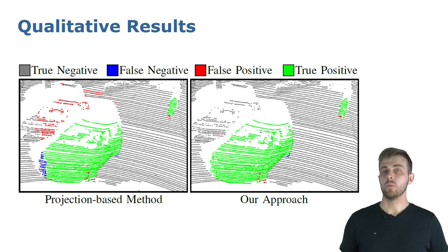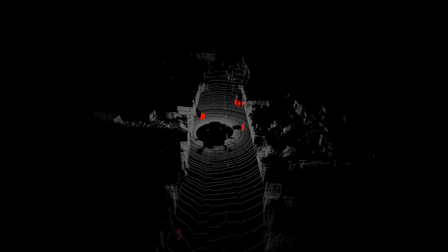In contrast to existing methods, we directly predict moving objects in the 4D space and do not require any projection. This avoids the commonly known label bleeding as seen on the left. This occurs because the points are close in the range image space whereas the separation is clearly visible in 3D.